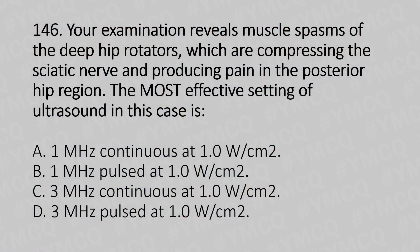Your examination reveals muscle spasms of the deep hip rotators, which are compressing the sciatic nerve and producing pain in the posterior hip region. The most effective setting of ultrasound in this case is: Option A, 1 MHz continuous at 1 Watt per centimeter square.